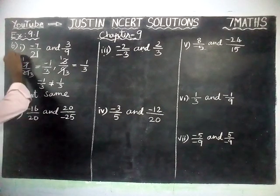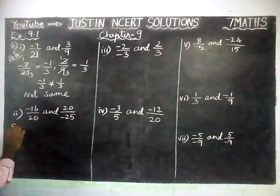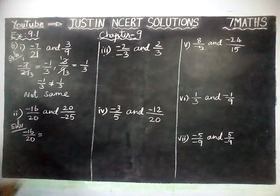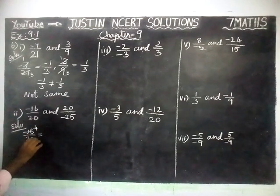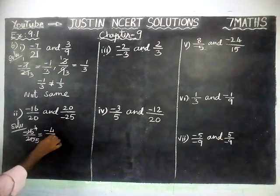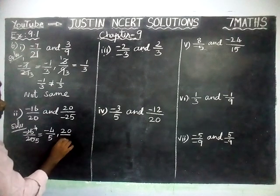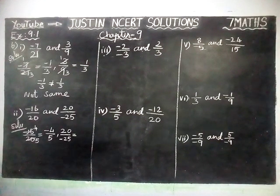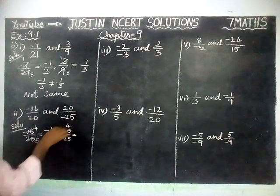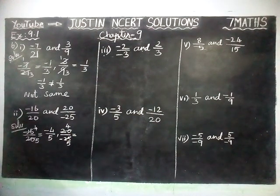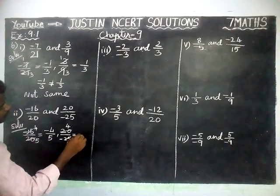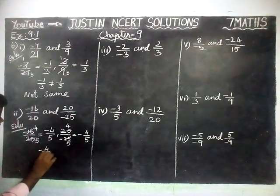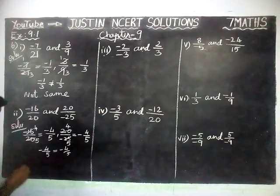Second pair: minus 16 by 20. We simplify by the common divisor 4 — 4×4 is 16, 5×4 is 20 — so this is minus 4 by 5. Next: 20 divided by minus 25. We simplify by 5 — 4×5 is 20, 5×5 is 25 — and the minus is common, giving minus 4 by 5. So minus 4 by 5 equals minus 4 by 5 — it is the same.